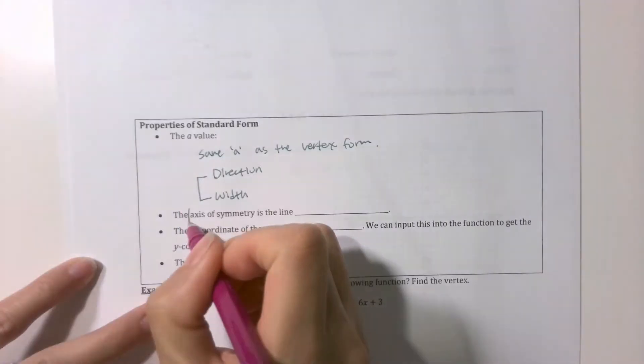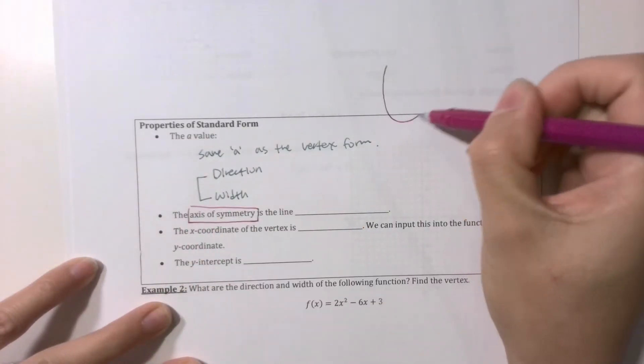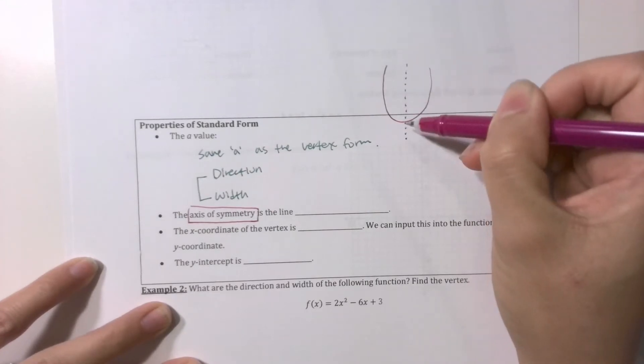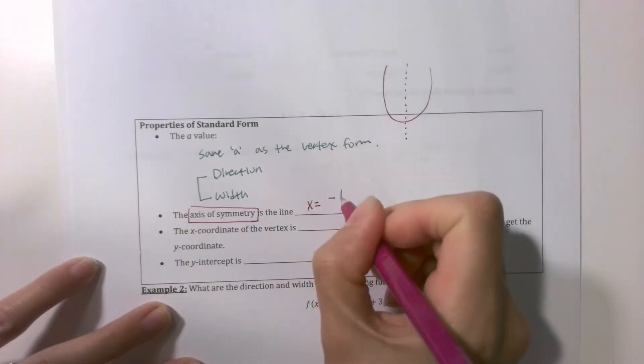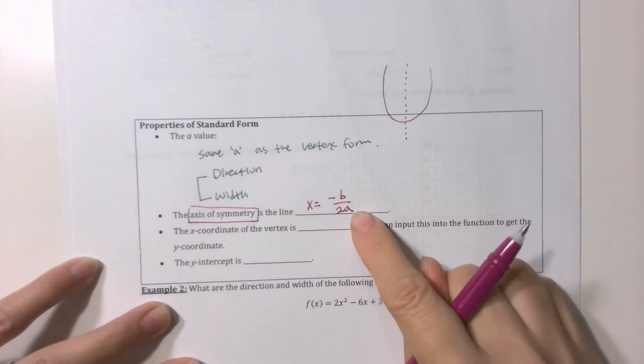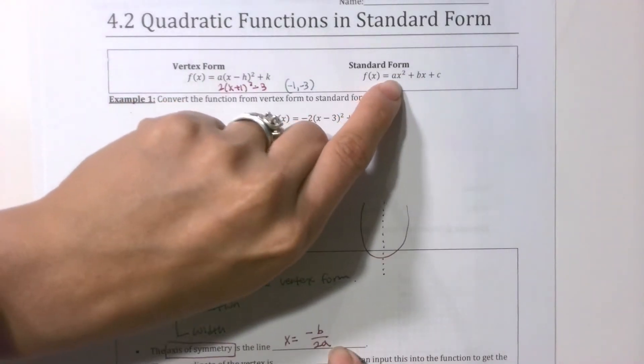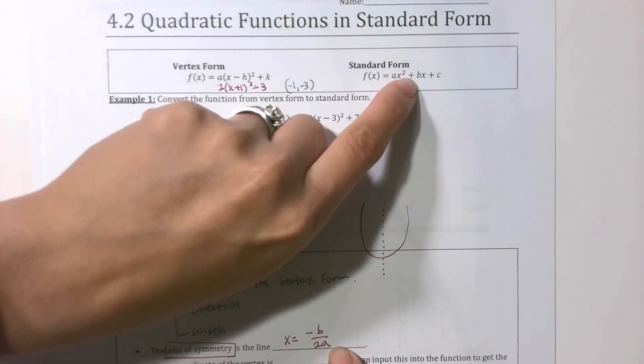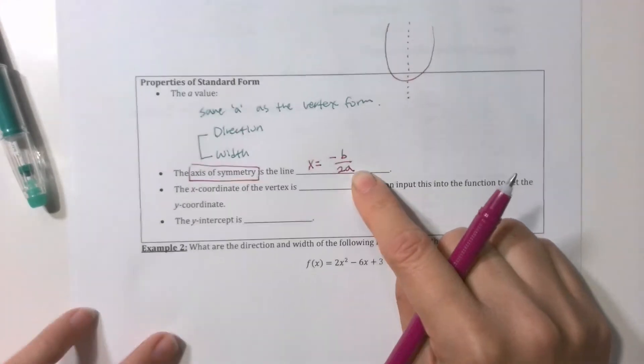Now, something new. Axis of symmetry is the line that goes through the middle of a parabola. And it's going to be x = -b/(2a). That's something you got to memorize. Where do those b and a come from? Right here. a is the number in front of x², b is the number in front of x. So you're going to plug it in to find out what that axis of symmetry is going to be.